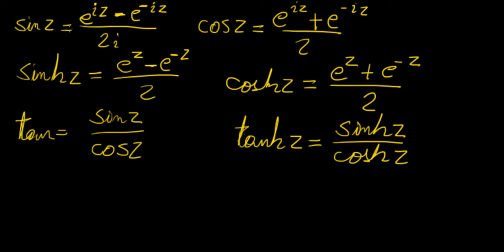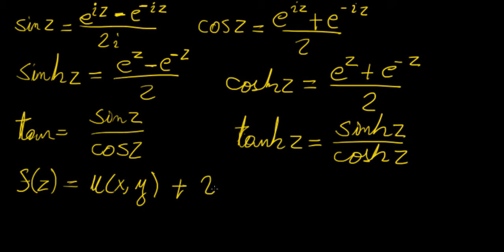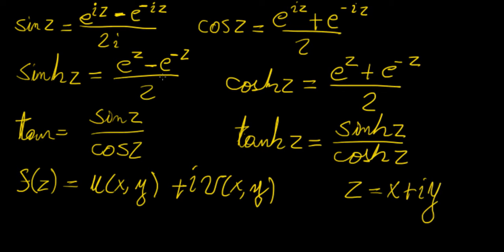We want to express our function in the form u(x,y) + i·v(x,y). To do that we replace z with x + iy in the function. Using sine of z as an example, plugging x + iy into the formula gives (1 / 2i) times [e^(i(x+iy)) − e^(−i(x+iy))].